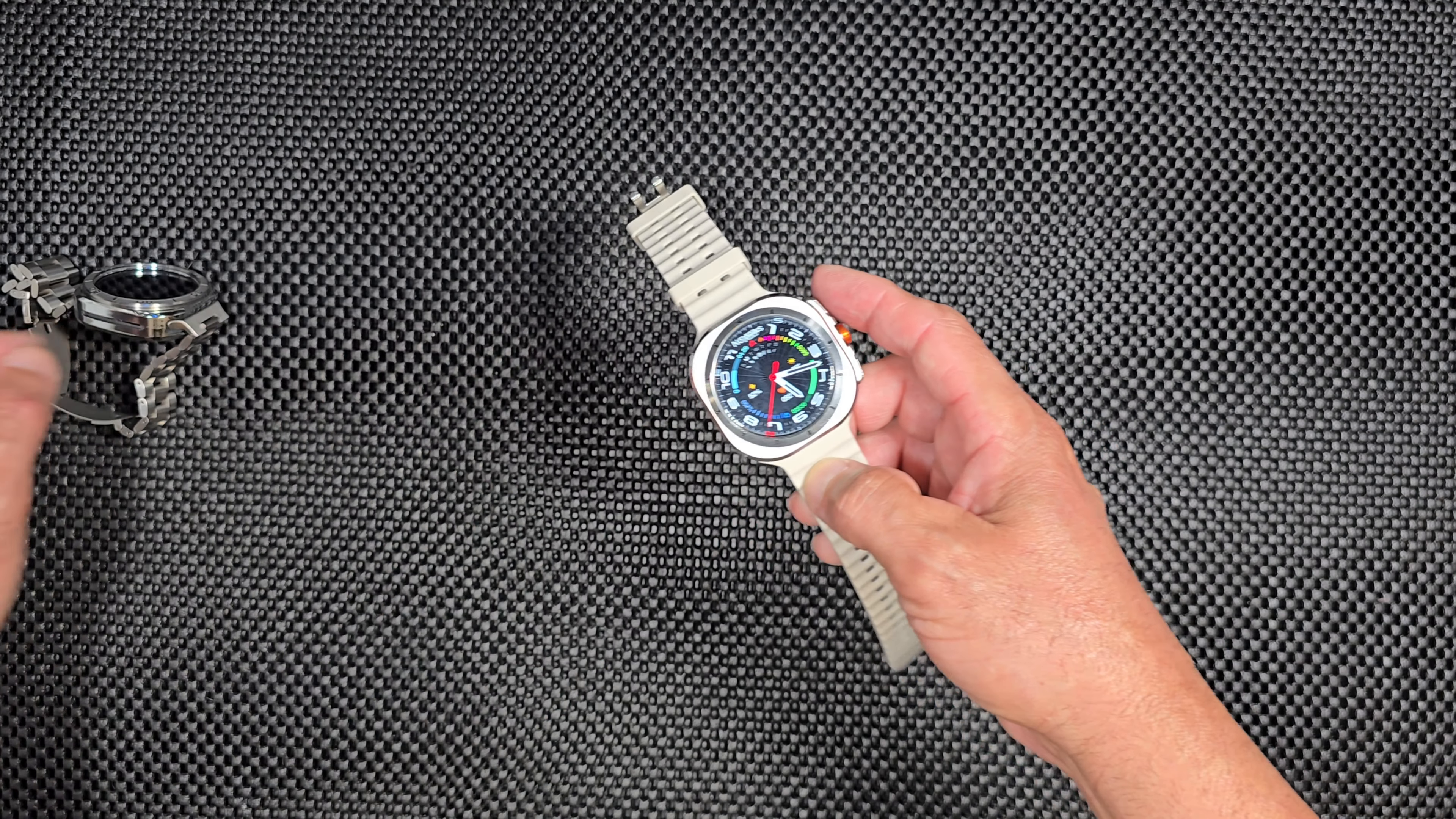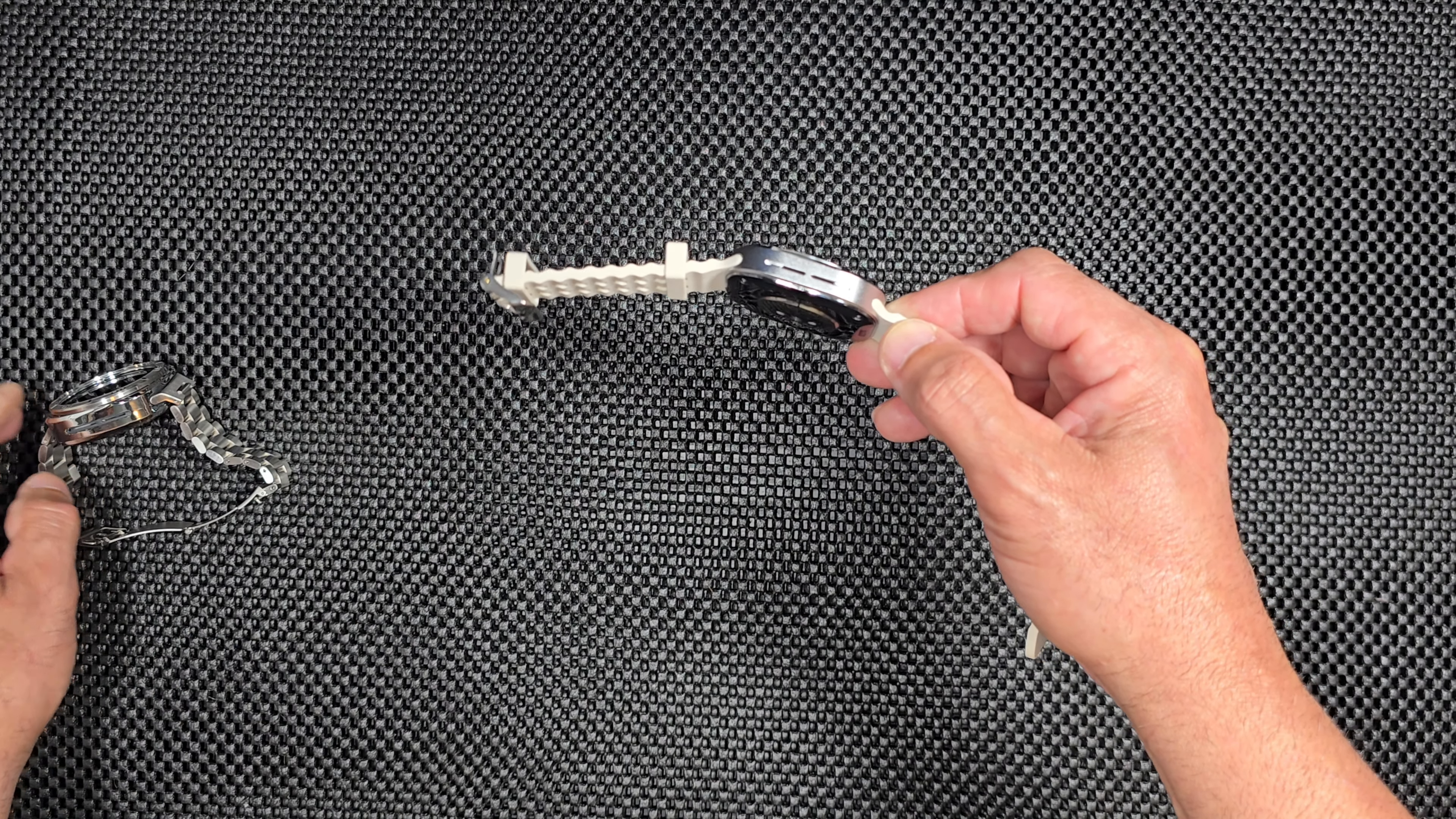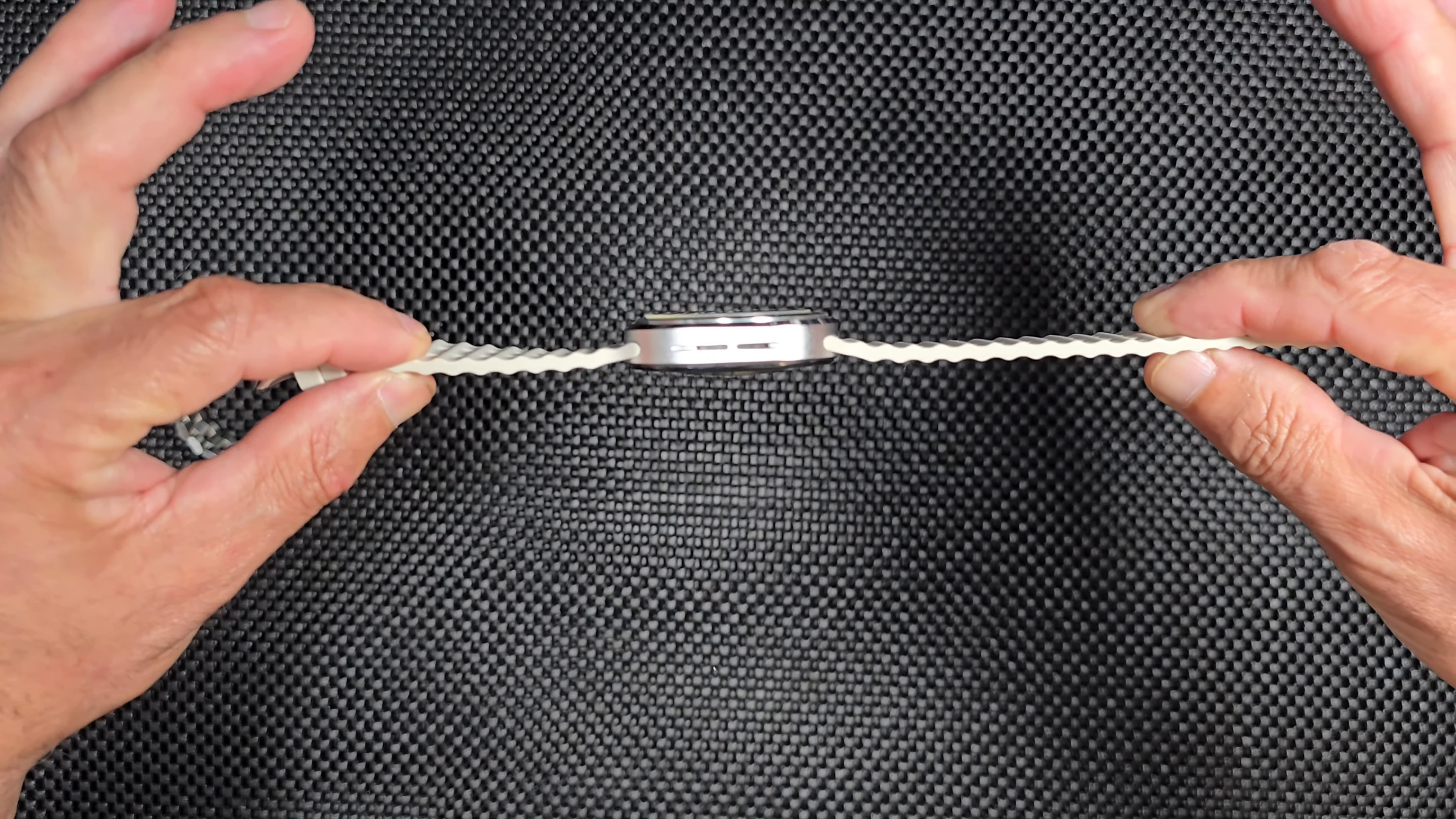Now the main thing that everybody was complaining about: the size. This is half the size of that, half the size. Look at that. This looks so slick. Look how thin it is and how slick this is. If Samsung made it like this, I'd be buying a couple of them for different occasions. Look how thin it is.